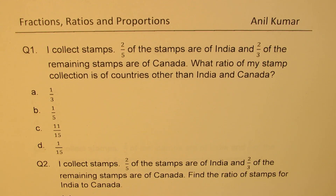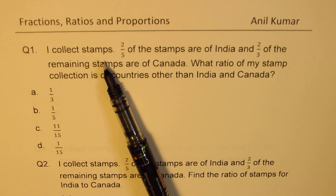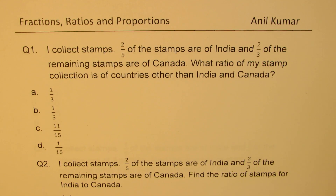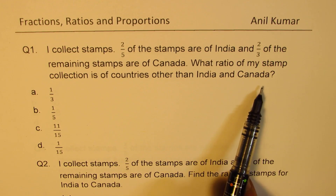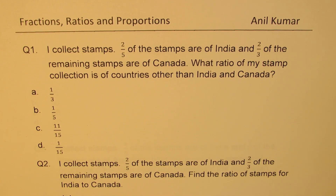I like you to first read these questions, answer them, and then watch my solutions. Question number one: I collect stamps. Two-fifths of these stamps are of India and two-thirds of the remaining stamps are of Canada. What ratio of my stamp collection is of countries other than India and Canada? Four choices are given to you.